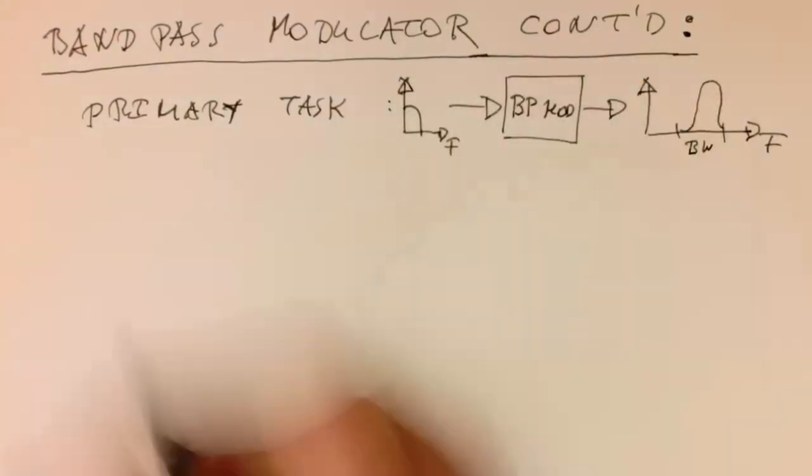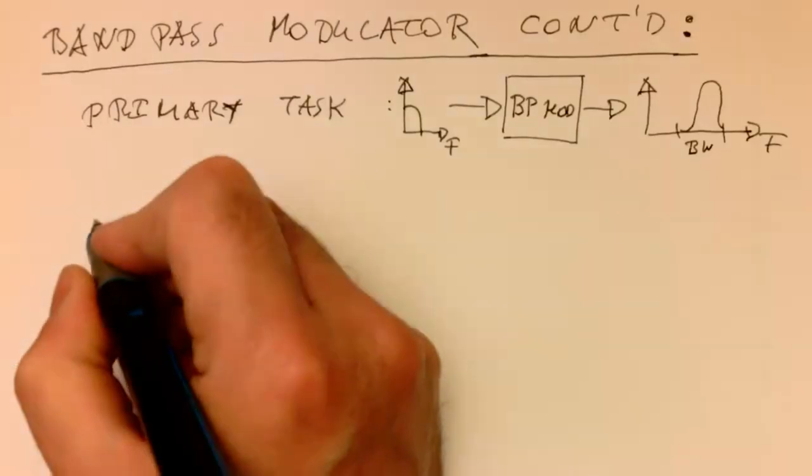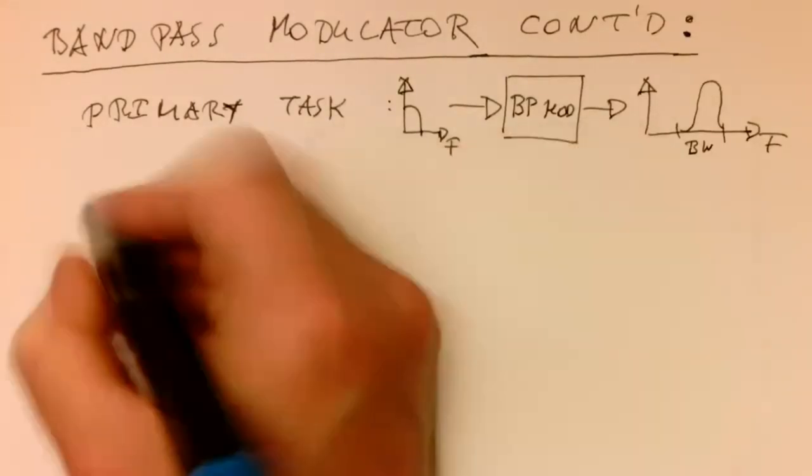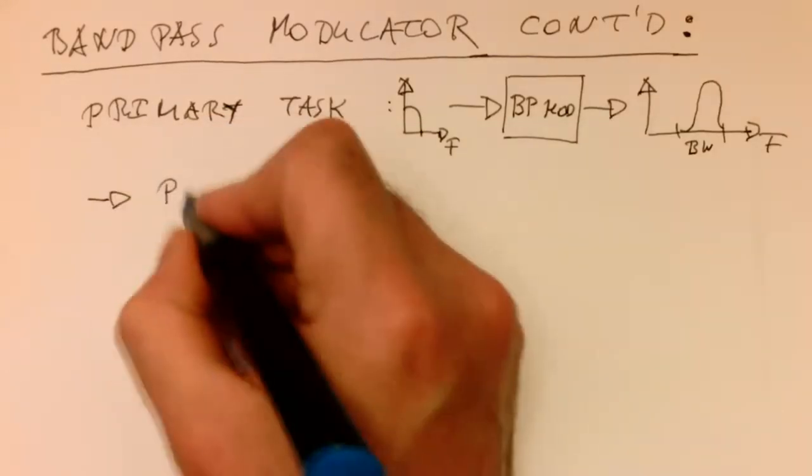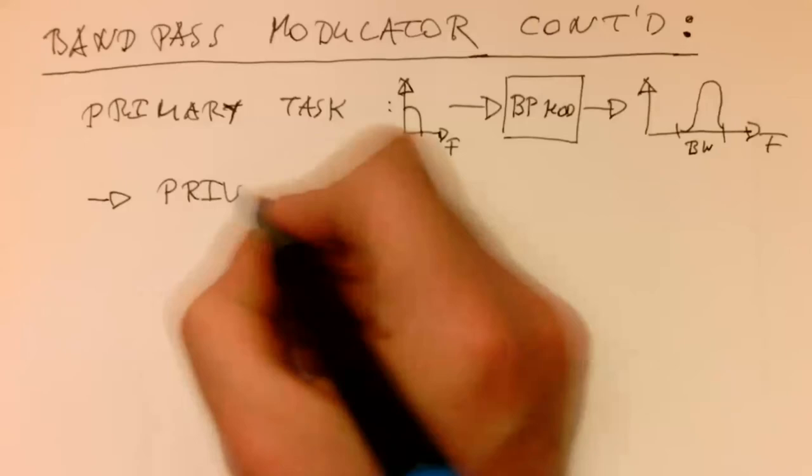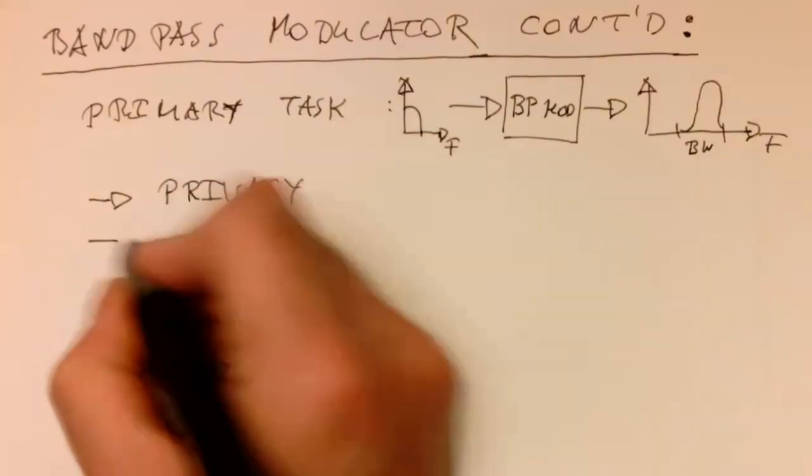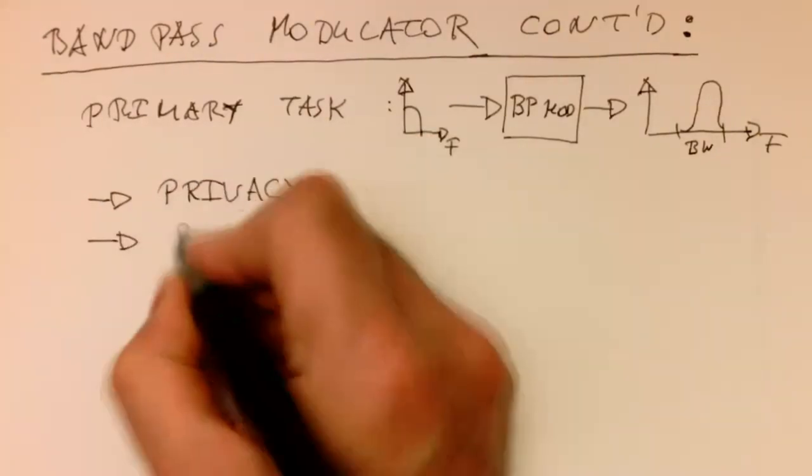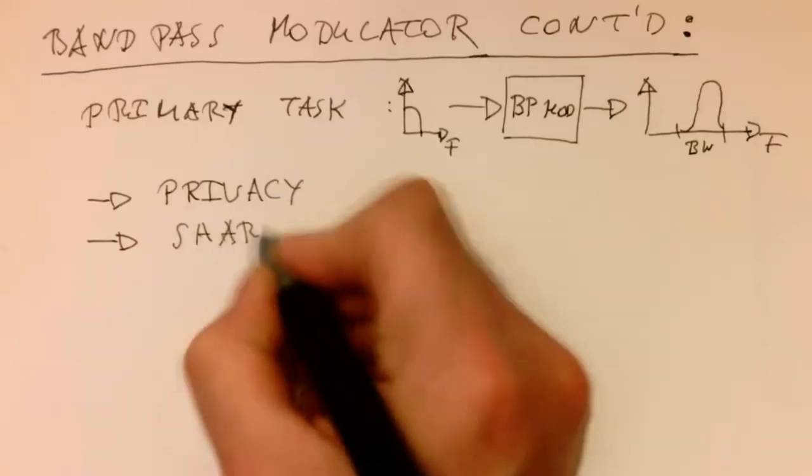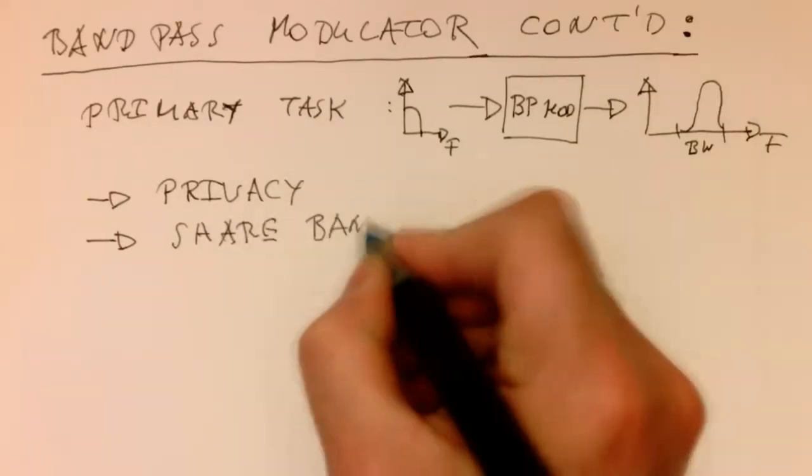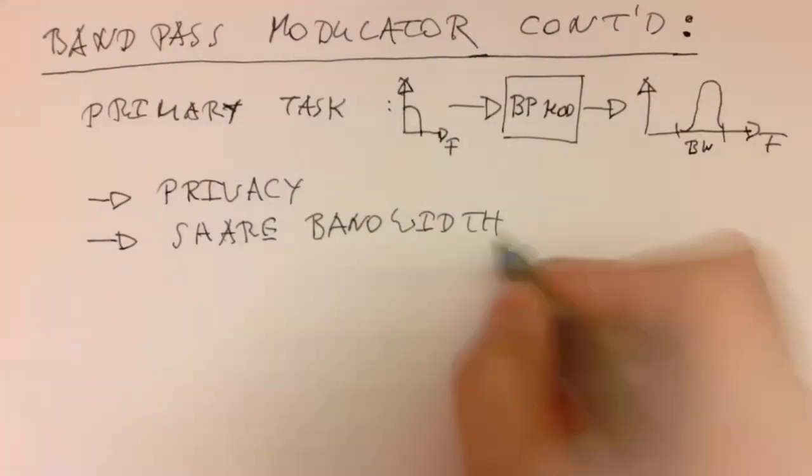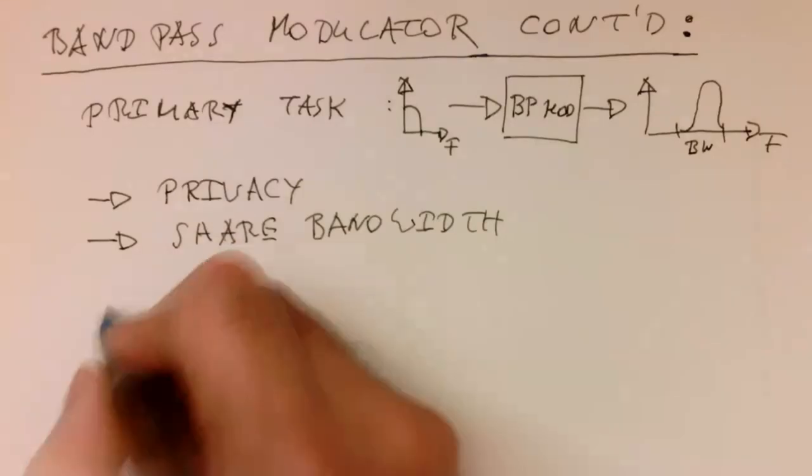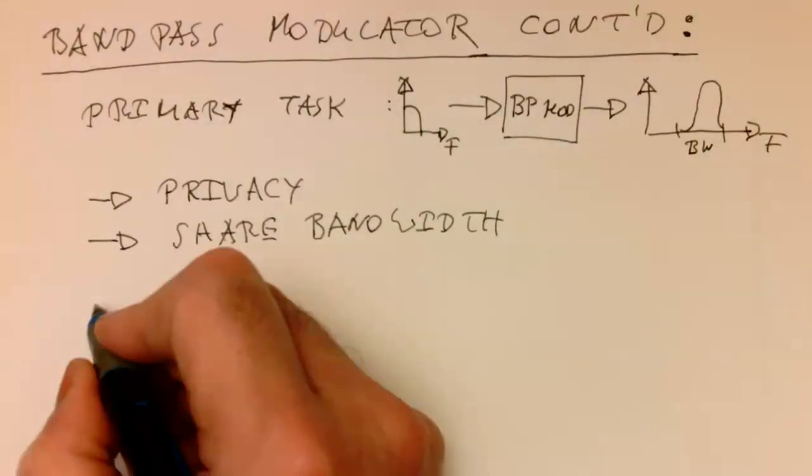Now, there are additional tricks and tweaks which we can do. For example, if you want to increase the privacy of the signal, we would like to share the bandwidth with other participants of this channel. The solution to this is, let's say, the secondary task.